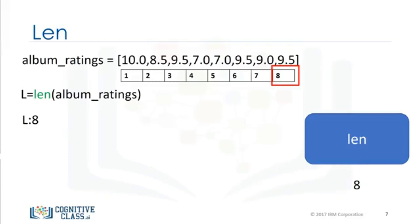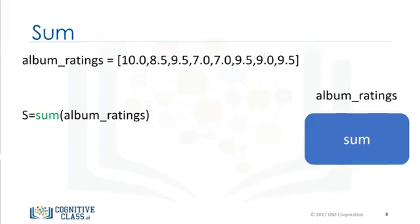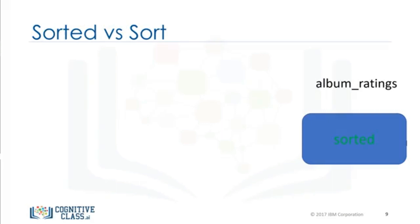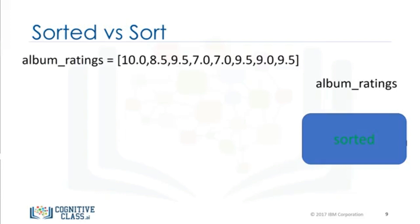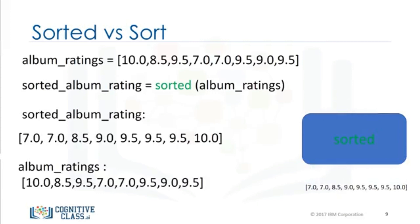The function sum takes in an iterable, like a tuple or list, and returns the total of all the elements. Consider the following list. We pass the list into the sum function and assign the result to the variable s. The function determines the total of all the elements — in this case the value is 70. There are two ways to sort a list. The first is using the function sorted. We can also use the list method sort. The function sorted returns a new sorted list or tuple. Consider the list album_ratings. We can apply the function sorted to get a new list sorted_album_rating. The result is a new sorted list. If we look at the list album_ratings, nothing has changed. Generally, functions take an input — in this case a list — and produce a new output, in this instance a sorted list.